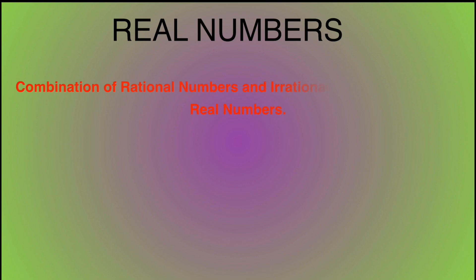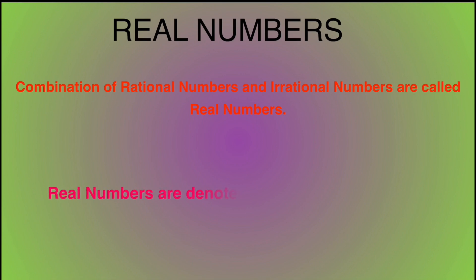Sixth one: real numbers. Combination of rational numbers and irrational numbers are called real numbers. Real numbers are denoted by the capital English letter R.